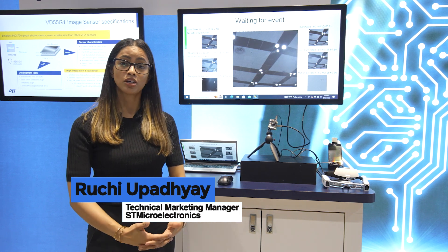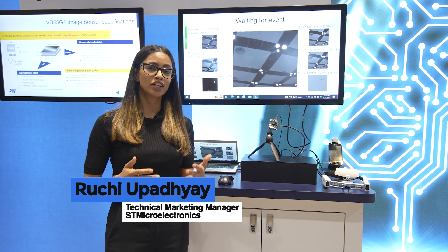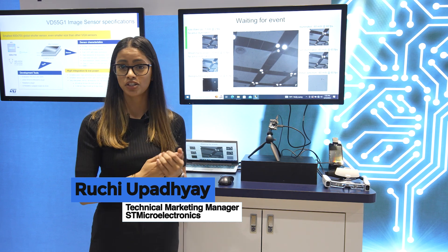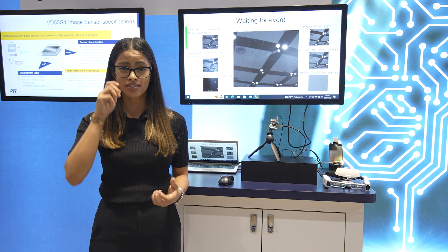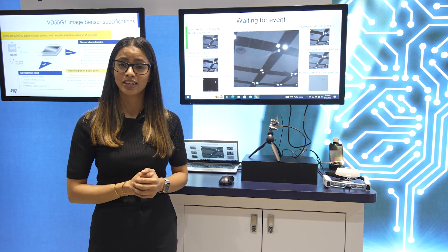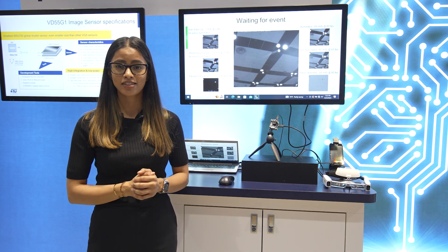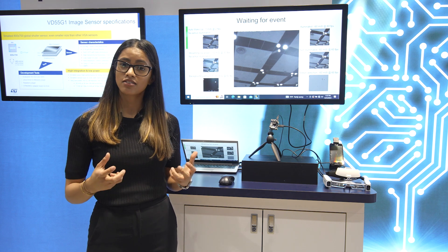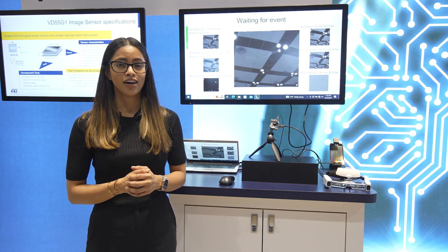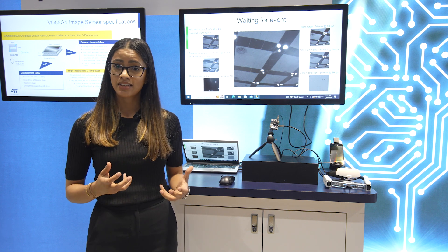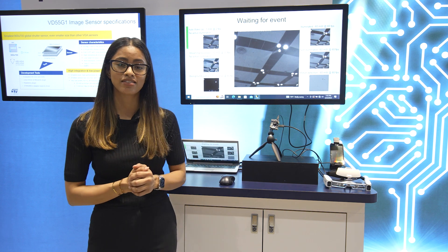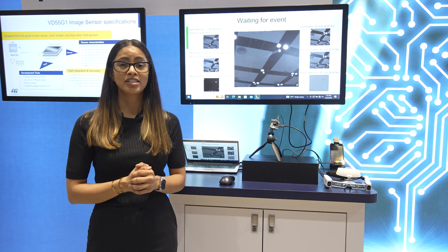I belong to the imaging division, and inside imaging we have four different technologies. Technology number one is our time-of-flight sensing — basically ranging and proximity devices. We also have 3D depth sensing solutions using a single chip. Third, we have ambient light sensing. And fourth, something we're showing here today, is our image sensors.